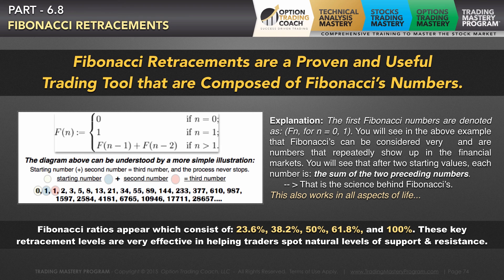The main thing to understand is that Fibonacci ratios consist of five main numbers: the 23.6% retracement level, the 38.2% retracement level, the 50% retracement level, the 61.8%, and then the 100%. They act as key retracement levels that are very effective in helping traders spot natural levels of support and resistance in the marketplace. To create Fibonacci retracements on your chart, you connect the peak to the trough, and that will automatically extrapolate all of the Fibonacci numbers.